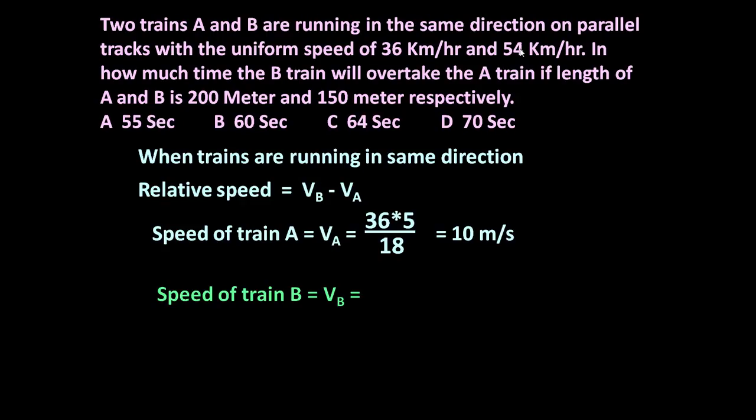Now speed of train B is VB equals 54 kmph, equals 54 into 5 divided by 18, equals 15 meter per second.